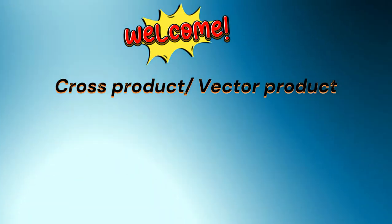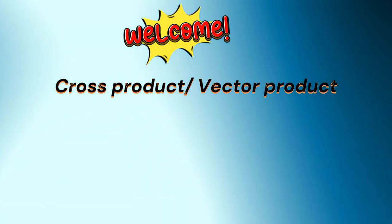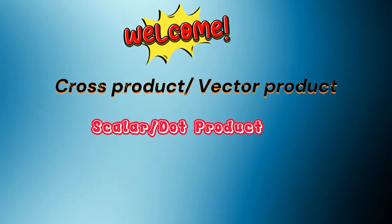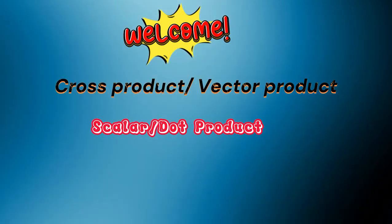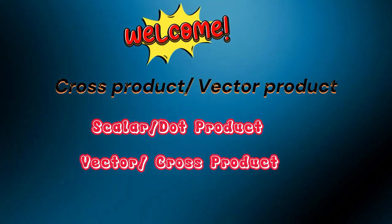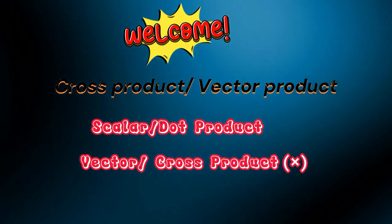In earlier video we learned about multiplication of two vectors called scalar product or dot product, but dot product is scalar quantity. There is another way of multiplication of two vectors to get vector quantity as resultant called vector product or cross product, because it is denoted by multiplication sign.